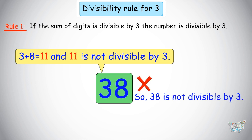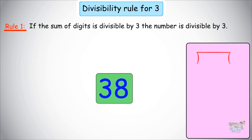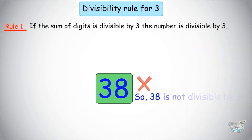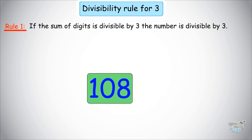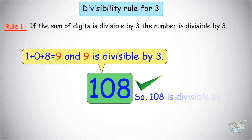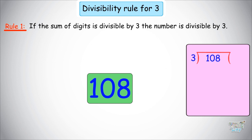You can always check your answer by doing the actual division to see if your answer is correct. Let's check in this case — divide 38 by 3. We do not get 0 as the remainder, so 38 is not divisible by 3. Our next number is 108. The sum of digits is 1 plus 0 plus 8 equals 9. 9 is divisible by 3, so 108 is also divisible by 3. You can check your answer — 108 divided by 3 gives you 36, so yes, your answer is correct.